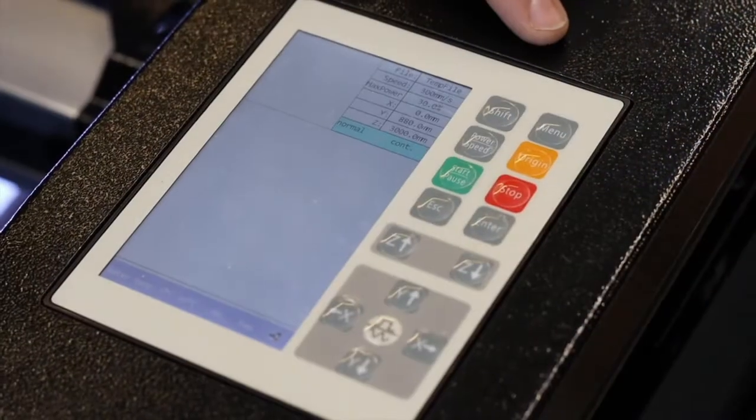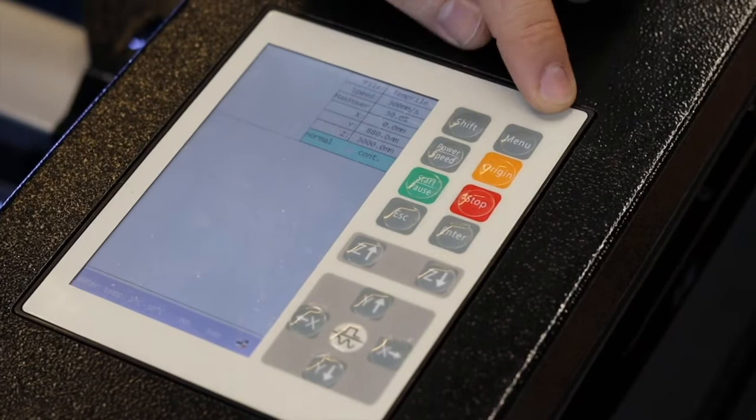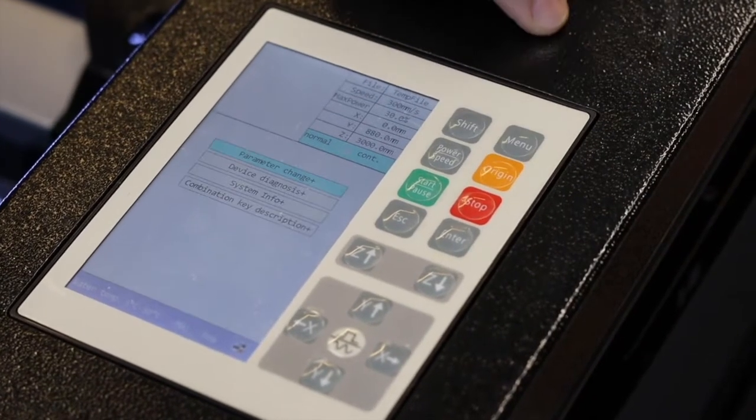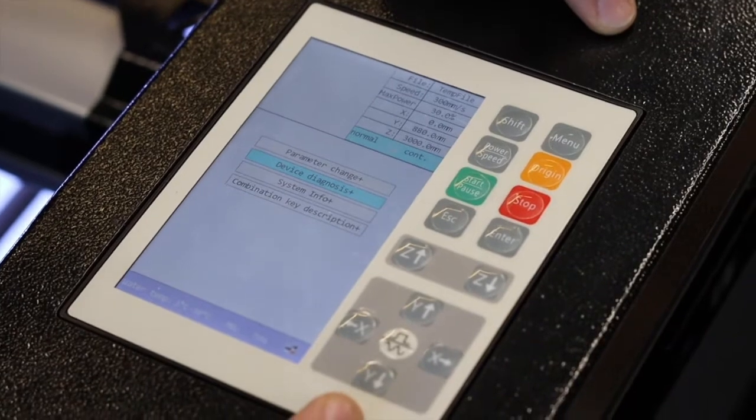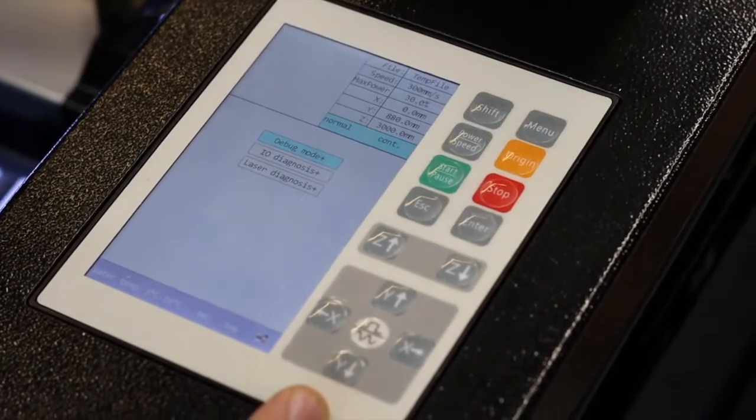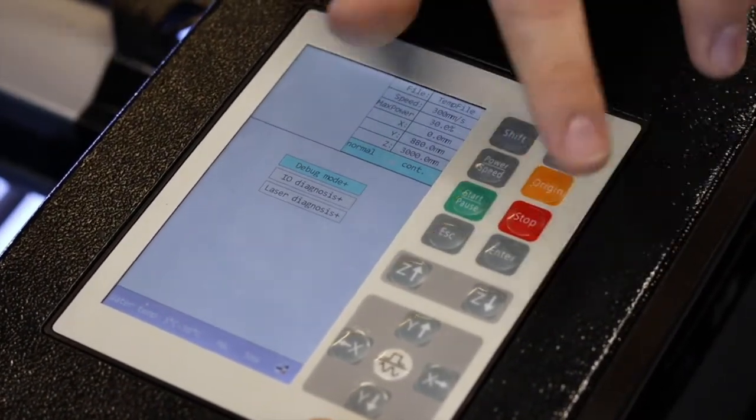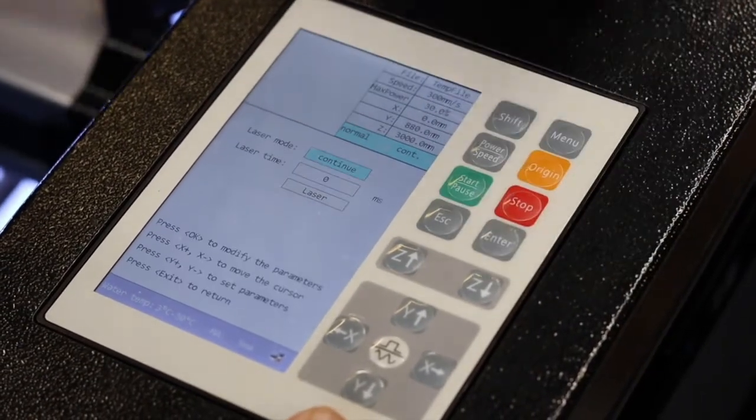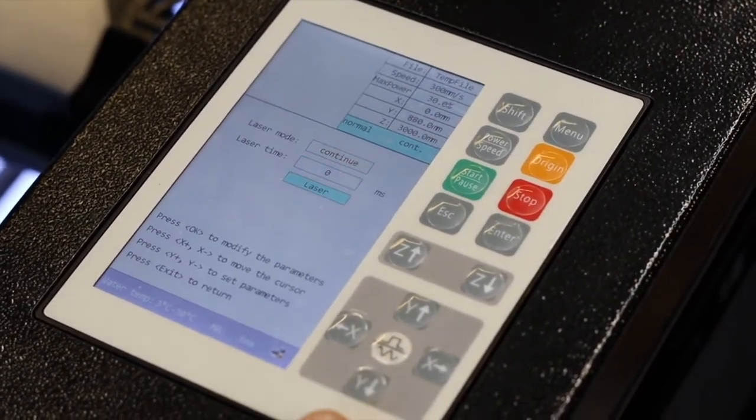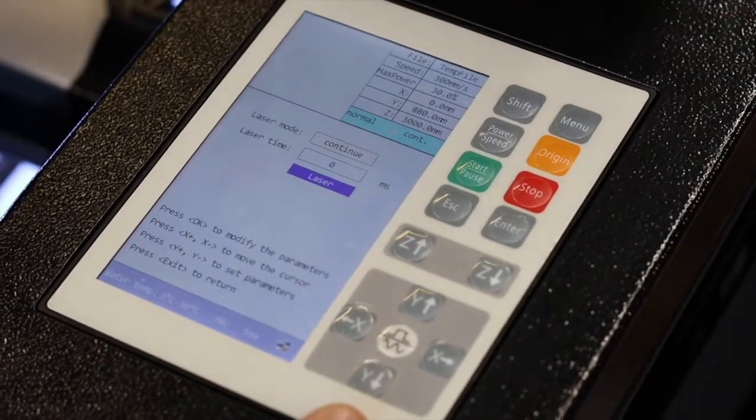This video is going to outline how to align with a remote. If you do not have a remote, you will go through the menus as shown here, navigating to device diagnosis, debug mode, laser set, then laser button. Pressing once will let you move the gantry, then enter again pulse the laser.